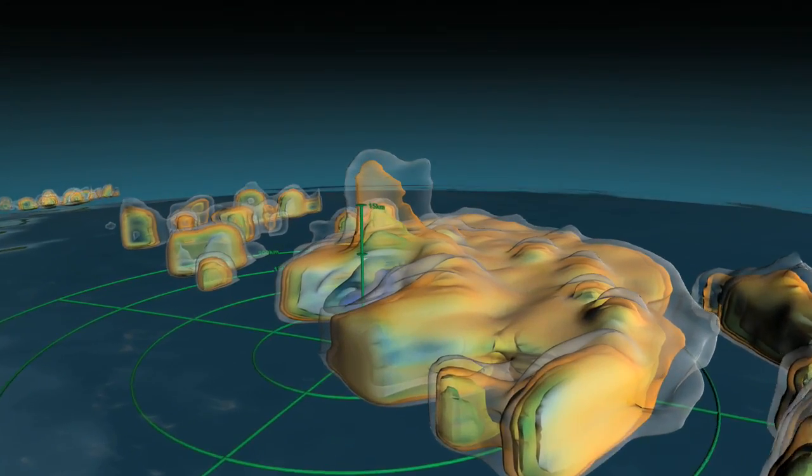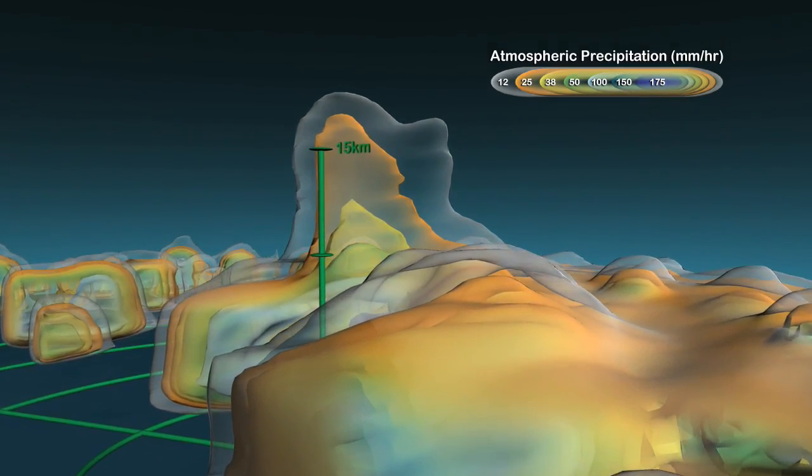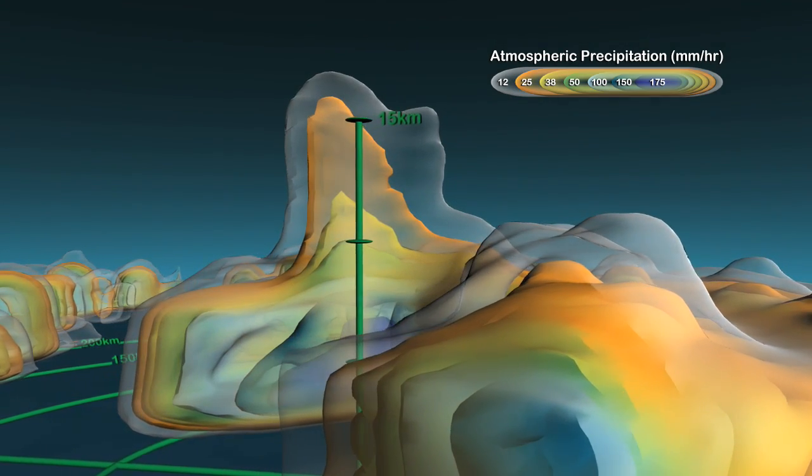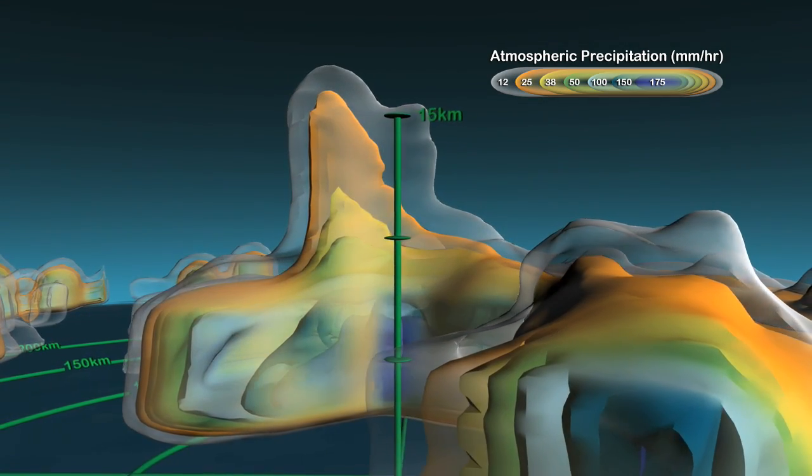Using TRMM measurements, scientists identified a dramatic feature in the structure of Hurricane Bonnie. Towering rain clouds close to the eyewall nearly reached the stratosphere.